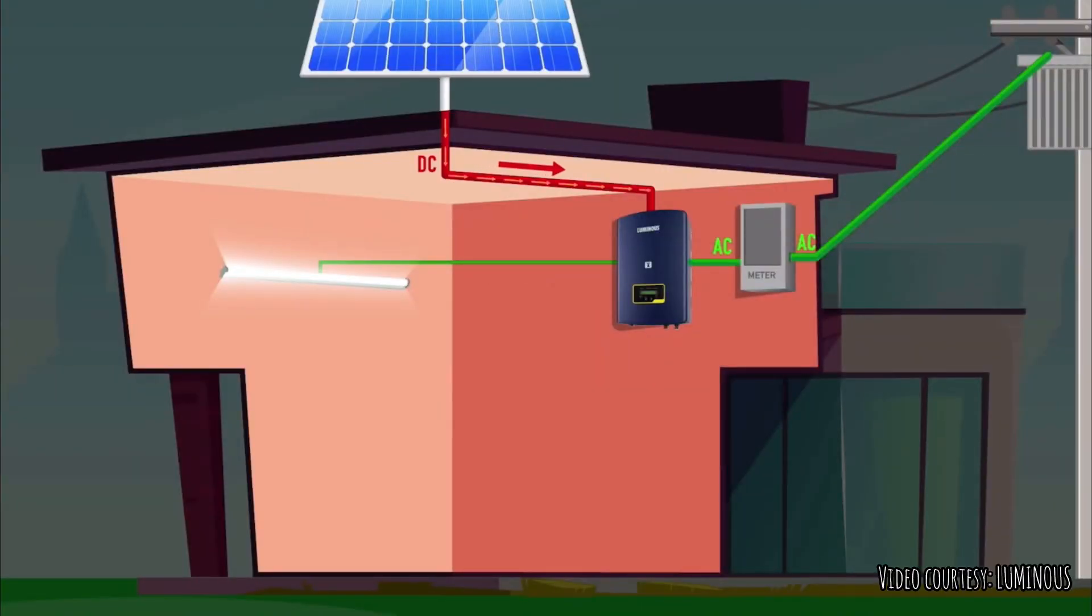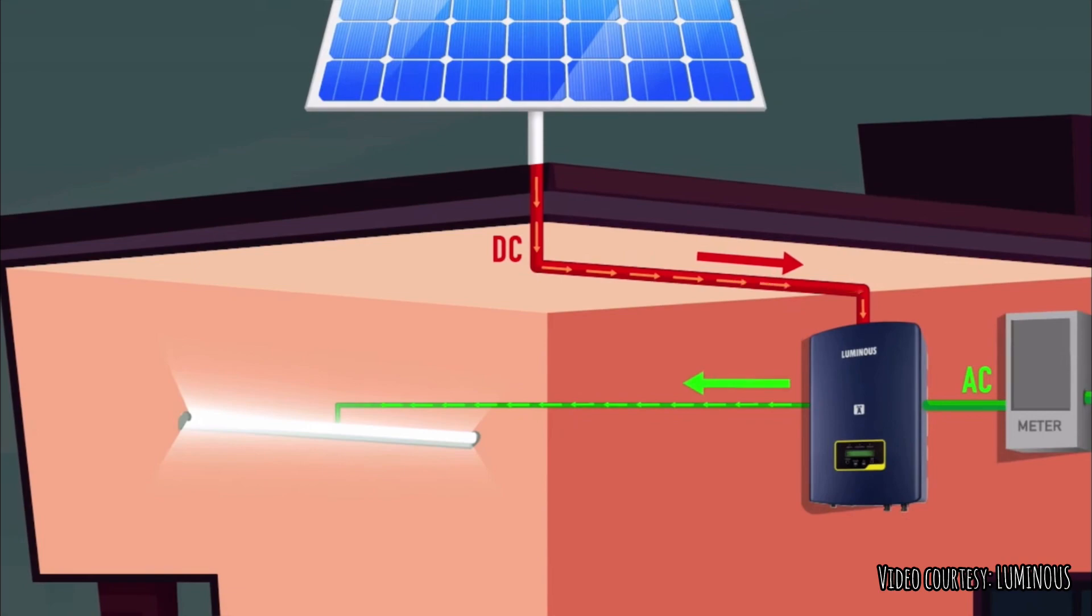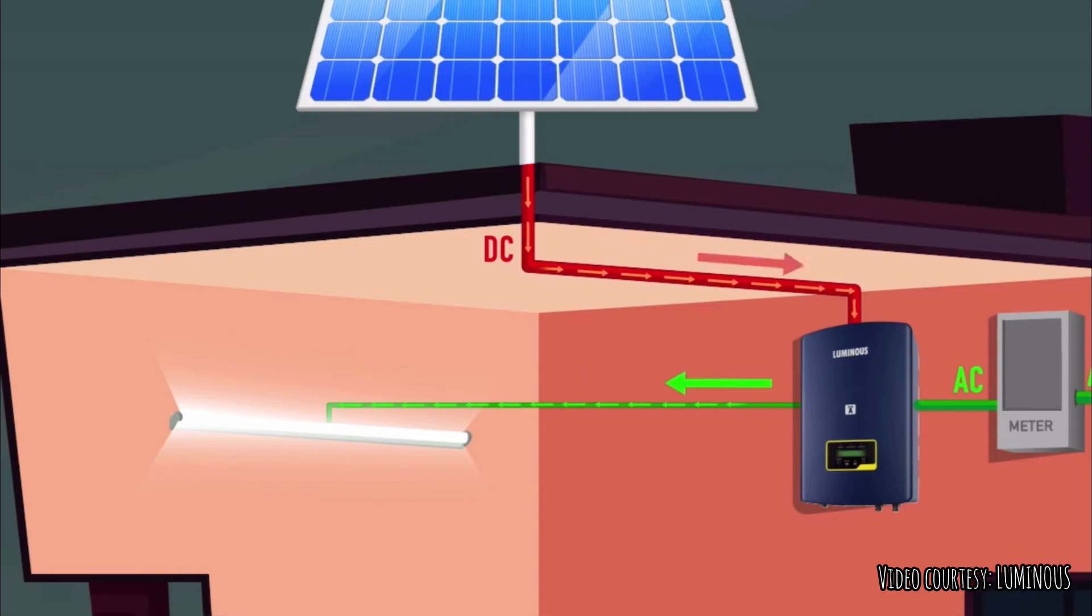In the on-grid system, the solar panels convert the solar energy into DC current and the inverter converts the DC current into AC current to power your home or business.